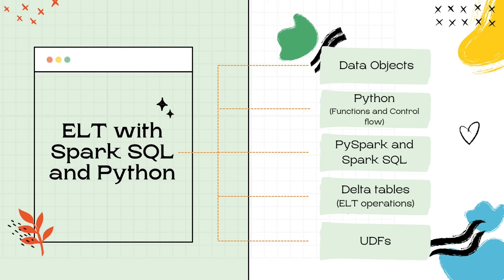The ELT with Spark SQL and Python section carries the maximum weightage. Most questions are code-based, while some are scenario-based. For this section, you should focus on: data objects or relational entities which includes databases, tables, and views; Python functions and control flow; different ways to pass data between PySpark and Spark SQL; ELT operations on delta tables; and creation and usage of SQL UDFs.